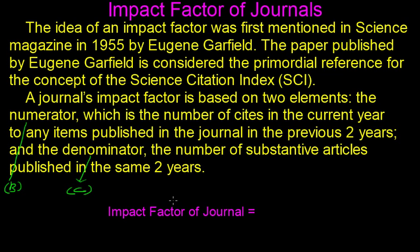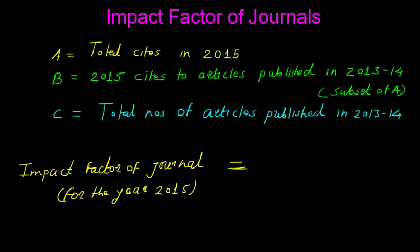Now let us calculate the impact factor of a journal for the year 2015. The formula is: impact factor = B divided by C. Here, A is the total citations in 2015. B represents the 2015 citations to articles published in the academic year 2013–14, which is a subset of A. C represents the total number of articles published in the year 2013–14.